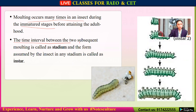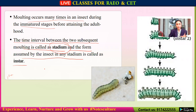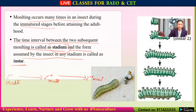The time interval between two subsequent moldings is called a stadium, and the form assumed by the insect in any stadium is called an instar. So between two molts, the time period is called a stadium, and in this time interval the insect is present in a particular form, which is called an instar.